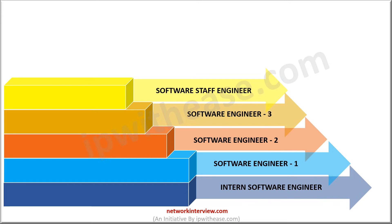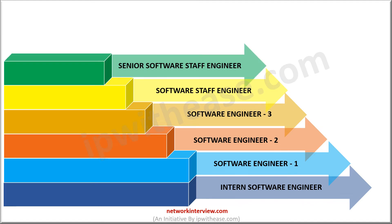After getting enough experience, you will be promoted to Senior Software Staff Engineer. It is the senior-most position that involves software development. A Senior Staff Engineer can lead a team or serve as head of different projects or product development, and they supervise the work of other software engineers. The average annual salary of Senior Staff Engineer at Juniper is 60–65 lakhs INR.